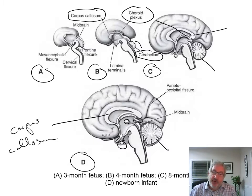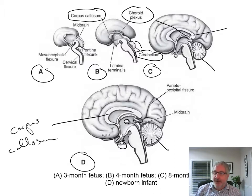There's more development — more gyri needed, more neurons that need to divide and develop — but everything's getting there.